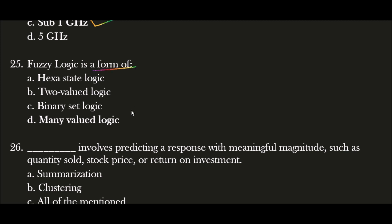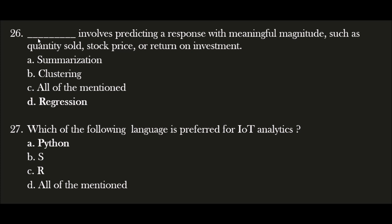Next question: Fuzzy logic is a form of? The correct answer is option D — many-valued logic. Fuzzy logic is a form of many-valued logic. Next question: Which term involves predicting a response with meaningful magnitude such as quantity sold, stock price, or return on investment? The correct answer is option D — Regression. Regression involves predicting a response with meaningful magnitude such as quantity sold, stock price, or return on investment.